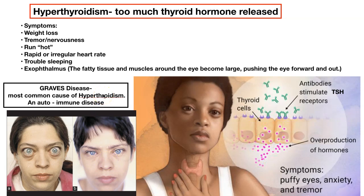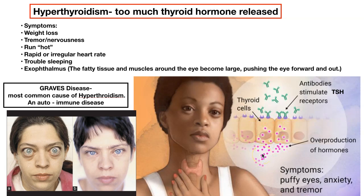The most common cause of hyperthyroidism is a condition called Graves disease, which is an autoimmune disease — your immune system is attacking yourself. The immune system makes antibodies that stimulate the TSH receptors, essentially acting like a rogue TSH. Those antibodies stimulate the receptors on thyroid cells, and the thyroid gland becomes fully activated, continuing to produce T4 and T3. So that needs to be treated — that is hyperthyroidism.